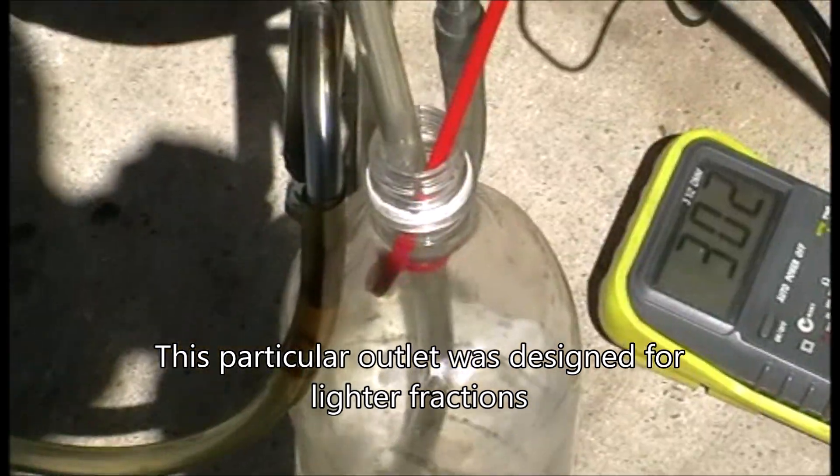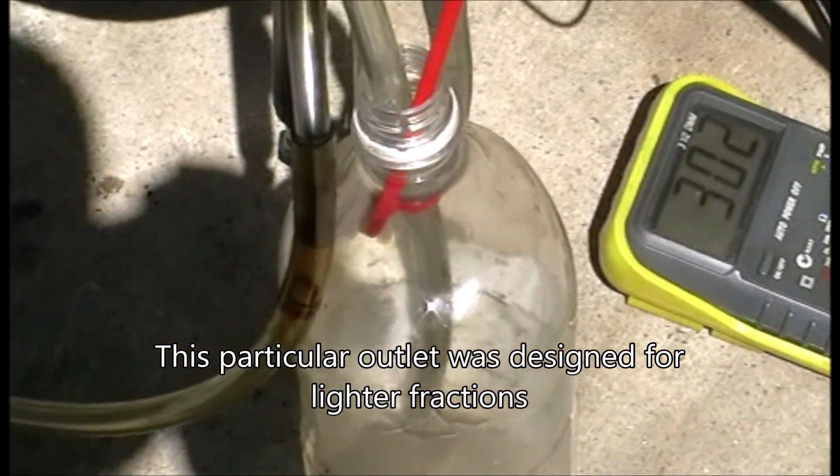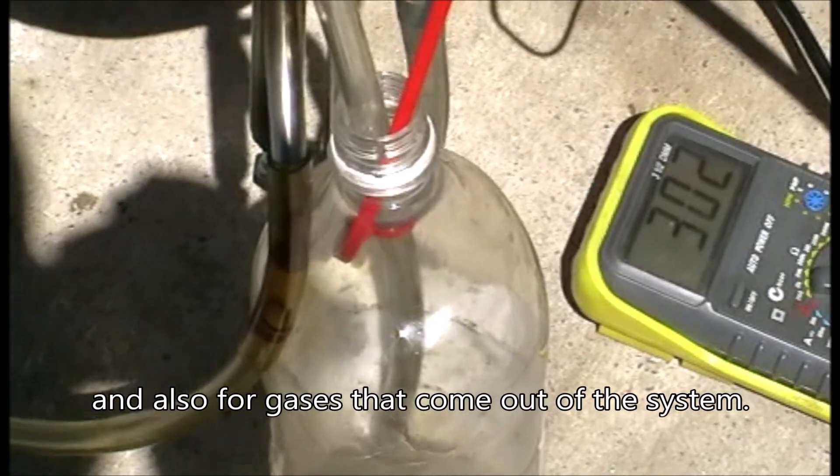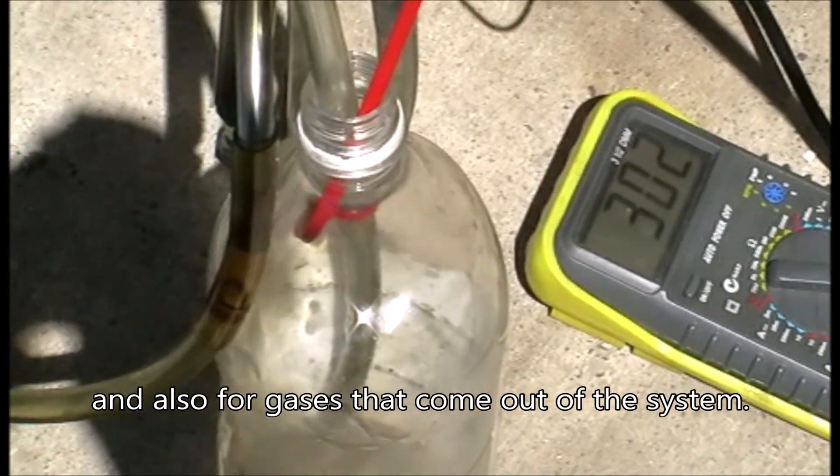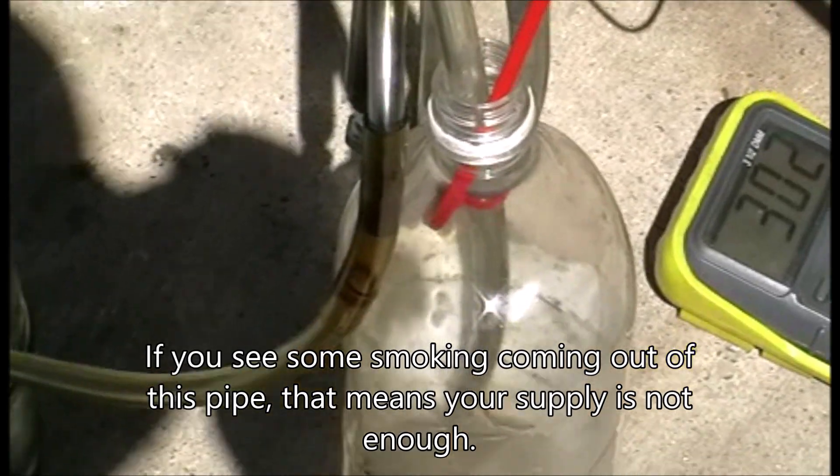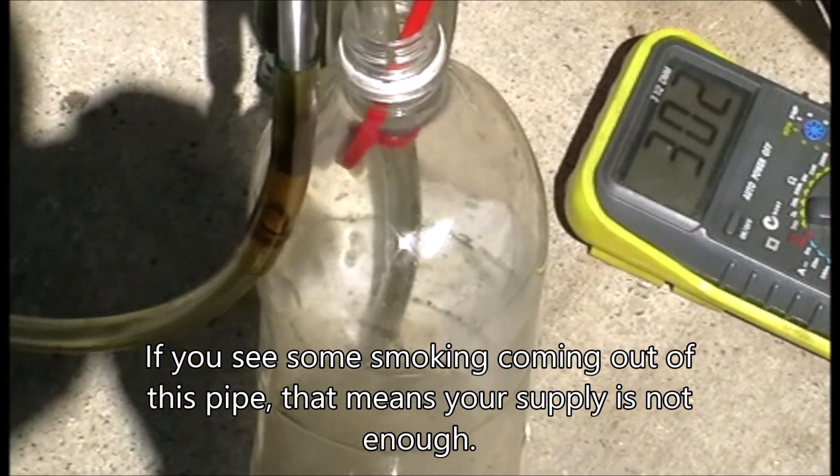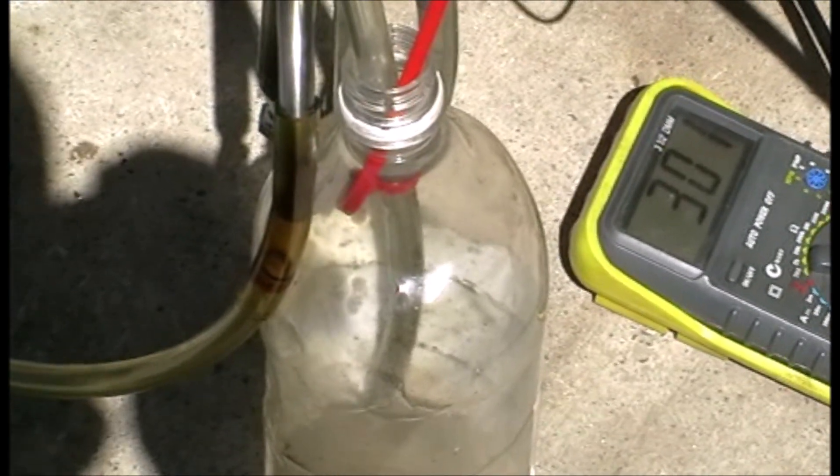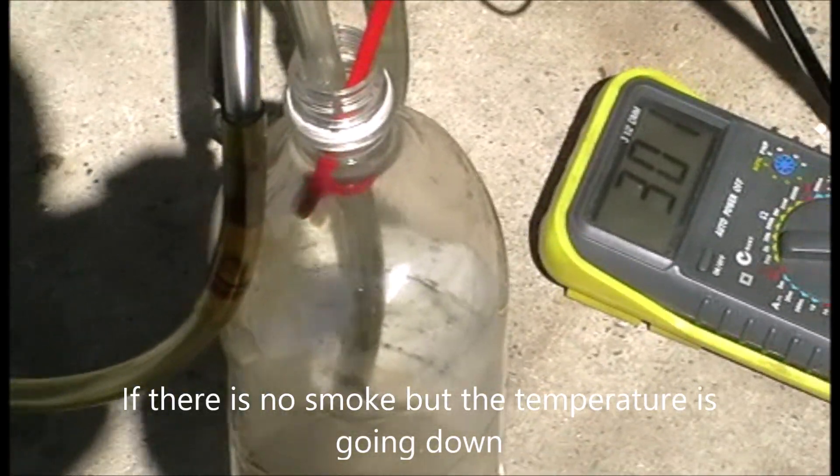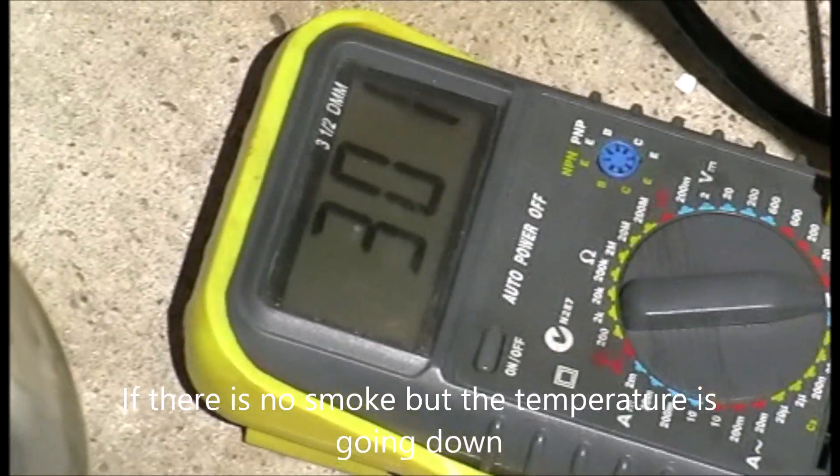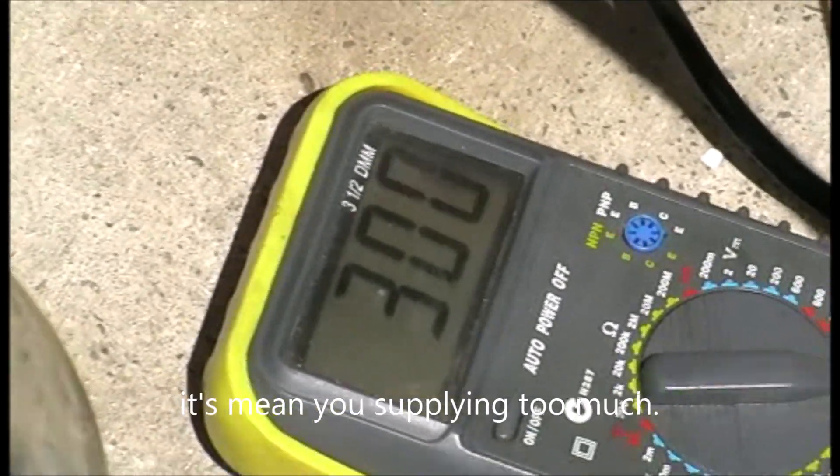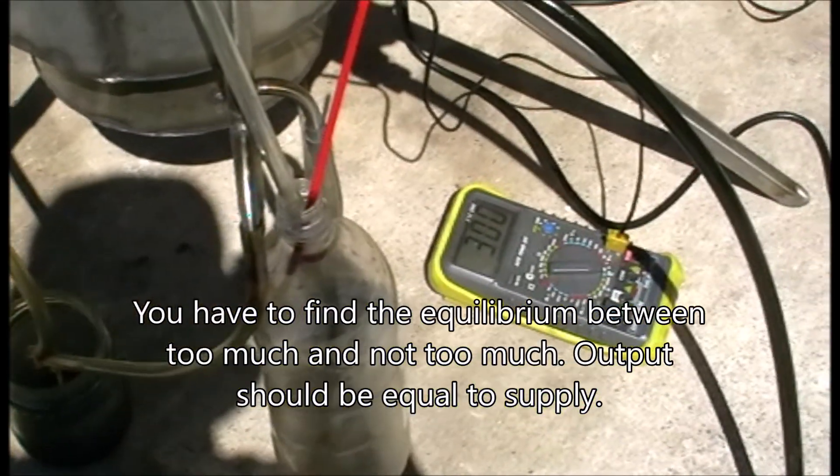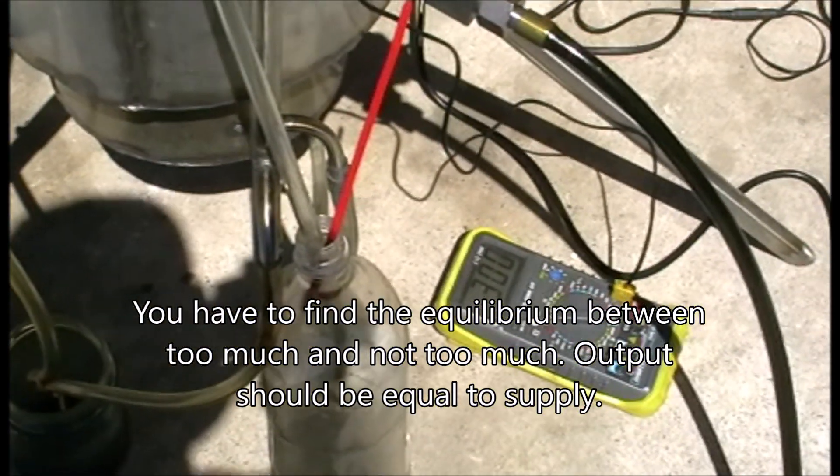This particular outlet that's designed for lighter fractions is also an outlet for the gas that's coming out of the system. If you see some smoking out of this pipe, that means your supply is not enough, so you have to increase the flow. But if there is no smoke and the temperature is still going down, that means you're supplying too much. So you have to find the equilibrium between too much and not too much.